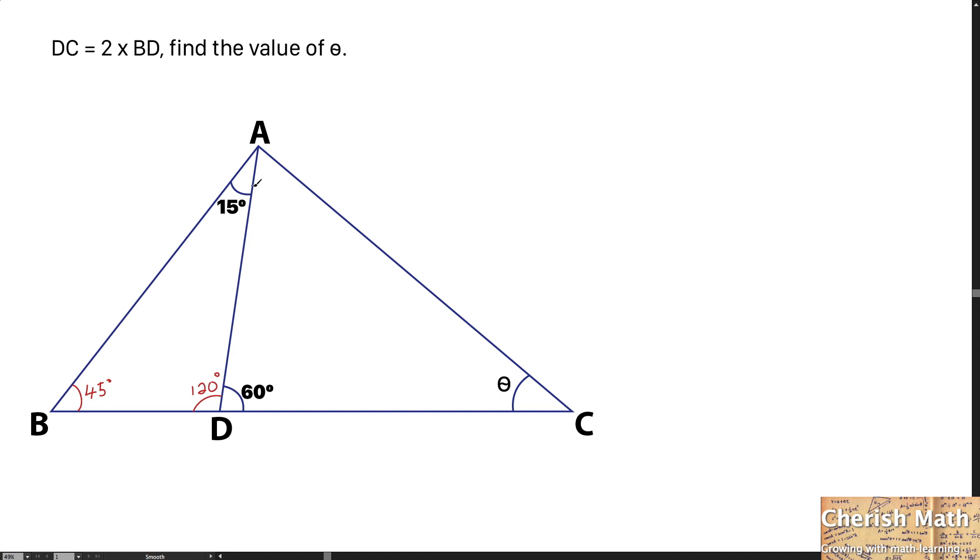Now I'm going to name this angle as alpha. Let's name AC as N. Since DC is twice the length of BD, if I assign X to be the length of BD, then DC would be 2X.